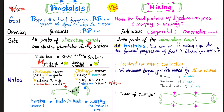Peristalsis is everywhere in the alimentary canal, beginning in the esophagus all the way to the rectum and anal canal. Moreover, you also find peristalsis in the ducts of glands, bile ducts, and even the ureter. As for mixing, it happens in some parts of the alimentary canal — because peristalsis alone can also perform the mixing function, especially when propelling food forward but the distal sphincter is closed. This is especially true in the pylorus and antrum of the stomach when it's closed by the pyloric sphincter.